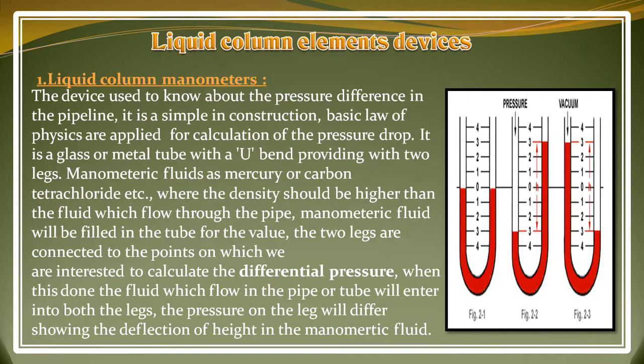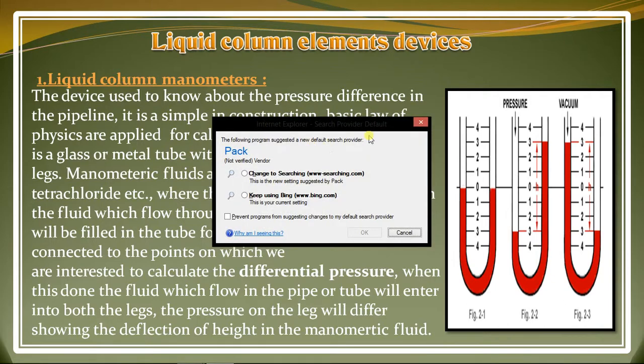The manometric fluid is filled in the tube. The two legs are connected to the points on which we insert it to calculate the differential pressure. When this is done, the fluid flowing in the pipe enters both legs. The pressure on the legs will differ, showing a deflection in the height of the manometric fluid.